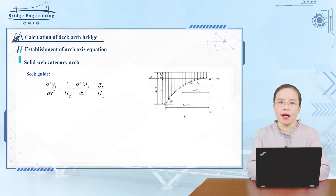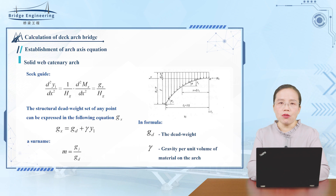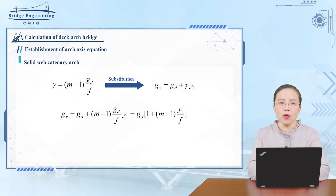The basic differential equation for calculating the deadweight pressure line is established. To obtain the general equation of the arch-axis, it is necessary to know the distribution law of the structural deadweight. From the figure, the structural deadweight concentration Gx of any point can be expressed by a formula, and substituting into the basic differential equation with introduced parameters yields the following results.